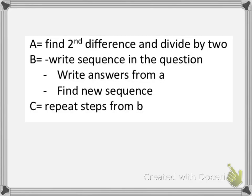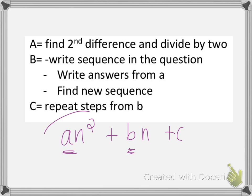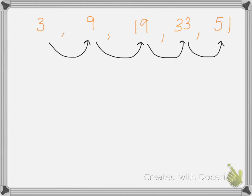To find the nth term of a quadratic sequence, we use the formula an² + bn + c. To find 'a', we first find the second difference and then divide it by 2. To find 'b', we write the initial sequence from the question, then write the values from 'a', and find the new sequence. For 'c', we repeat similar steps. Here 'n' means the position term, such as 1, 2, 3, 4.